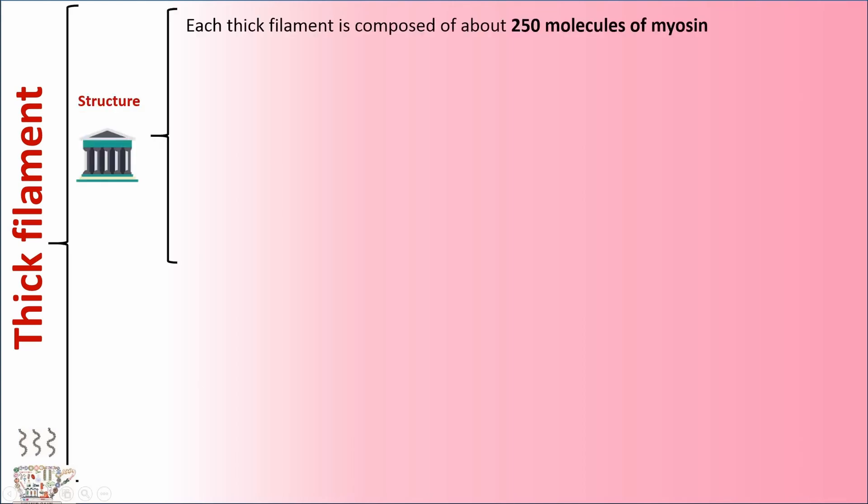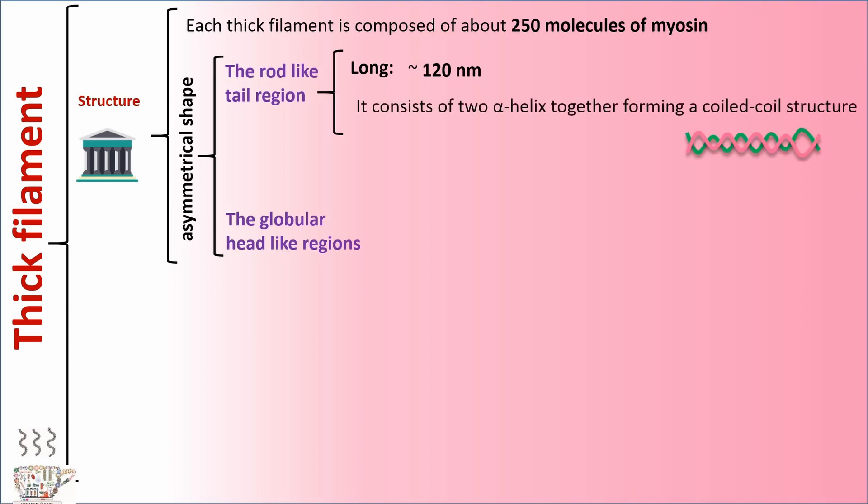Thick filament. Each thick filament is composed of about 250 molecules of myosin. It has asymmetrical shape and has two parts in its structure: the rod-like tail region and the globular head-like region. Tail region is about 120 nanometers long and consists of two alpha helix together forming a coiled-coil structure.